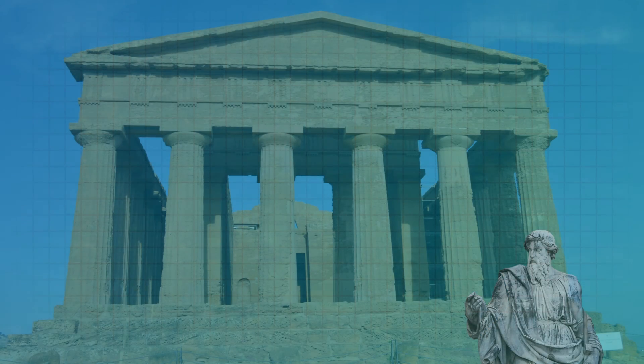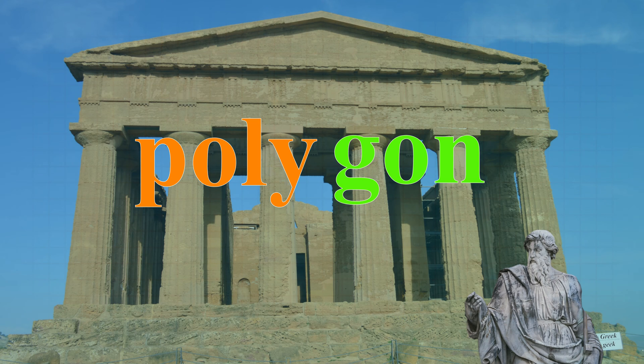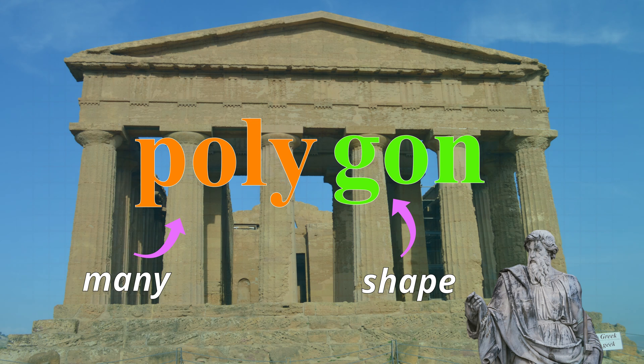2D shapes that have straight sides are called polygons. These were first named by Greek mathematicians over 2,000 years ago. For example, in the Greek language, poly means many and gon means a shape. So a polygon is a shape that has more than two straight sides.